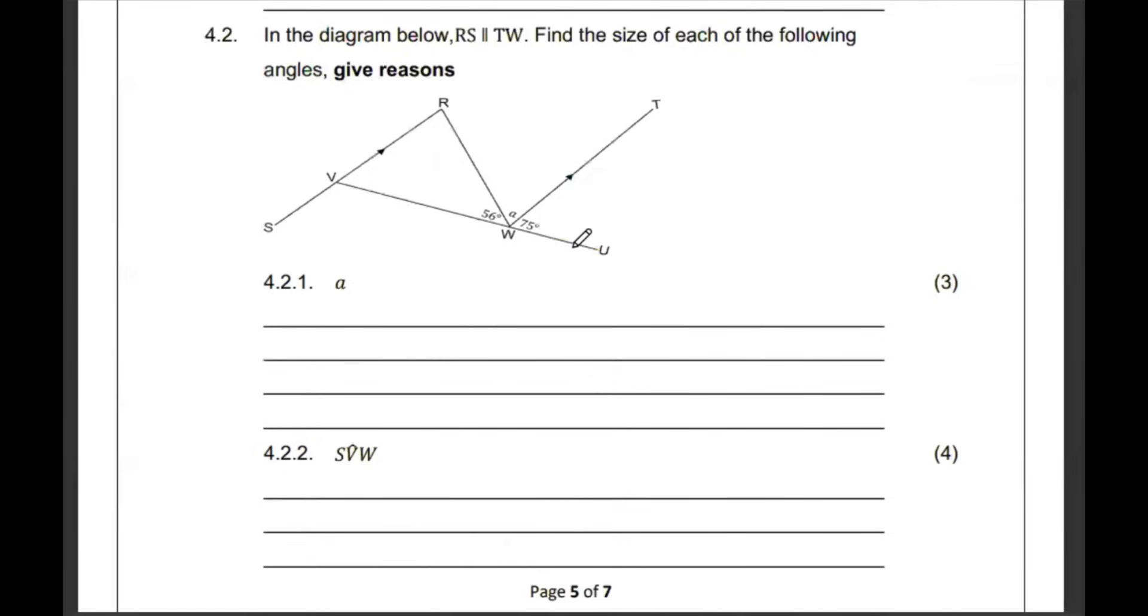And then 4.2. They are telling us that RS is parallel to TW. We must find the size of a. So, what we know is that 56, a, and 75, they are all at one point on a line. So, we're going to say that 56 plus a plus 75 must give us 180 degrees adjacent supplementary angles. And then we know that 56 and 75, that's 131. A plus 131 should give us 180. And then A becomes 180 minus 131, which is 49 degrees.